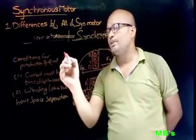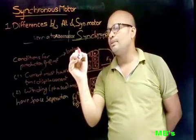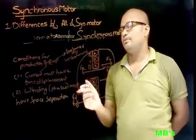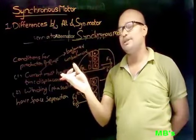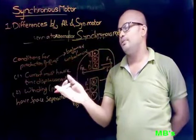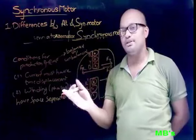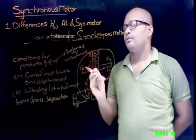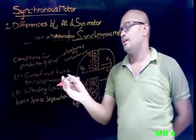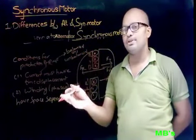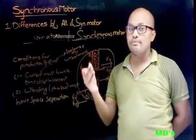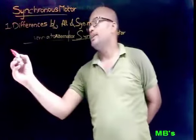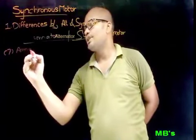Regarding the current condition: if the currents are balanced, have time displacement, and the windings have space separation, then the poles formed will have a definite speed and direction. If the currents are unbalanced but the windings have space separation, poles will still be formed, but they will not have a definite speed and direction.